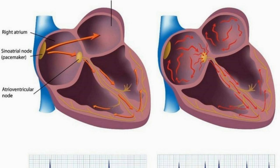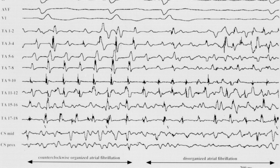If the AV node also does not function properly, the Purkinje fibers and bundle of His take over.